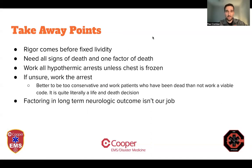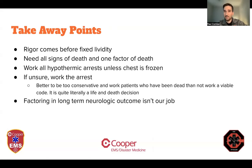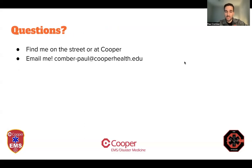The big takeaway points: rigor comes before fixed lividity, so rigor should be the first thing you're looking for if you're not going to resuscitate someone. If you don't have rigor, you should have fixed lividity. If you have neither, you need to work the patient. You need all five signs of death and one factor of death. You need to work all your hypothermic arrests unless you physically cannot compress the chest. And if you're ever in doubt, just work the arrest — it is literally a life or death situation. I would much rather work 10 patients who had been dead for quite some time versus miss one who just died before I got there. Factoring in long-term neurologic outcome isn't really our job. If you have any questions, find me on the street, at Cooper, or feel free to shoot me an email. Thanks.